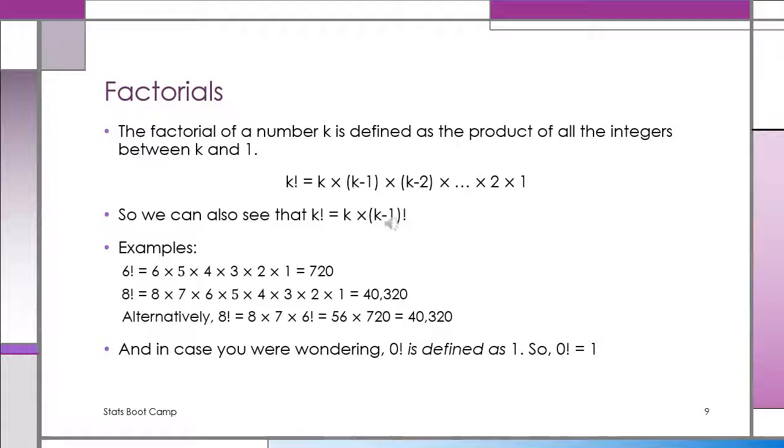On your calculator, you'll probably notice there's a key with an exclamation point. If you've never used it before, that's a factorial. Any integer, we can get the factorial of any integer as the product of all of the integers between that number and 1. Easiest to see with an example. 6 factorial is equal to 6 times 5 times 4 times 3 times 2 times 1. And if you do all of those multiplications, you have 720.